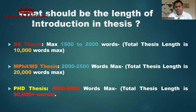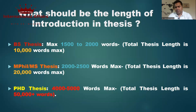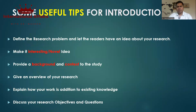Regarding the length of your introduction: for a BS thesis, the maximum thesis size is around 7,000 to 10,000 words, and your introduction should be around 1,400 to 2,000 words. For an MPhil thesis, you can increase the word limit to 2,500 to 3,000 words maximum, as the total MPhil thesis word limit is around 20,000 words. For a PhD thesis, a four to five thousand word introduction is more than enough, as the PhD thesis word limit is more than 50,000 words. So introduction lengths are roughly 1,500–2,000 words for BS, 2,500 words for MPhil, and 4,000–5,000 words for PhD.